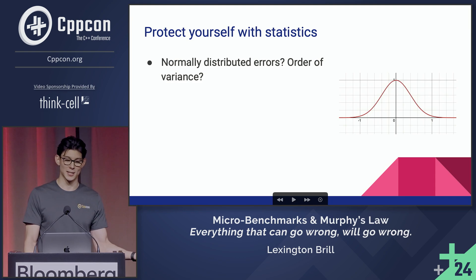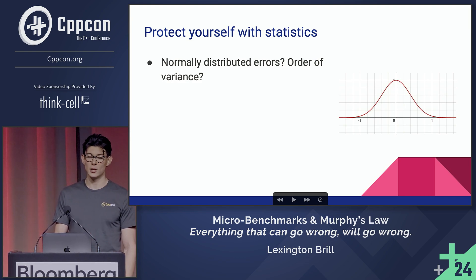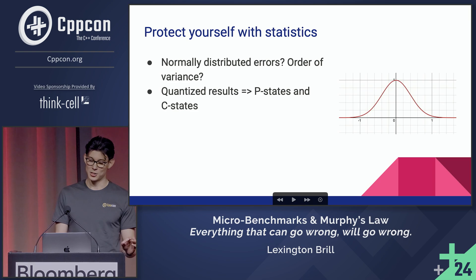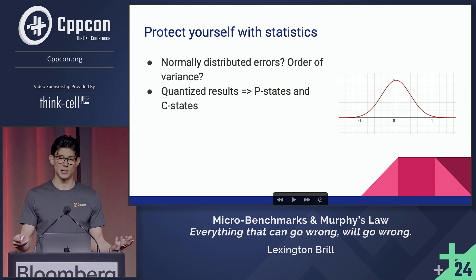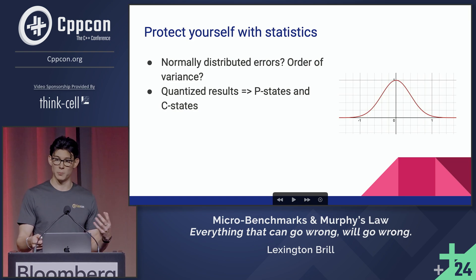You can also use statistics. Check if your errors are normally distributed and look at the order of your variance. If your variance is on a similar or the same order as your measurements themselves, you probably want to take everything you measured with a grain of salt. Also, look for quantized results — if you can cluster results into different time groups, you're probably going through P states and C states and your CPU is getting locked at certain frequencies.